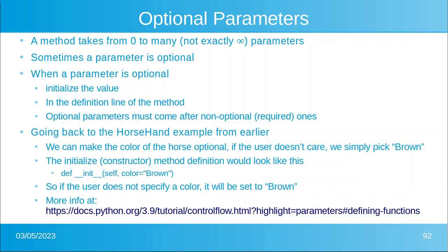So if we look at the horse example, we can make the color of the horse optional. If the user doesn't care what color, then we could just maybe pick brown. So if you look there at the screen you'll see the initialize routine now says self.color equals brown.